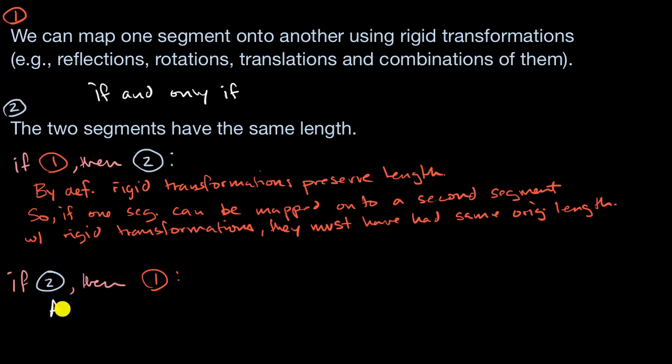So let's assume I have segment AB and then I have another segment, let's call it CD, that have the same length. So they meet statement two.